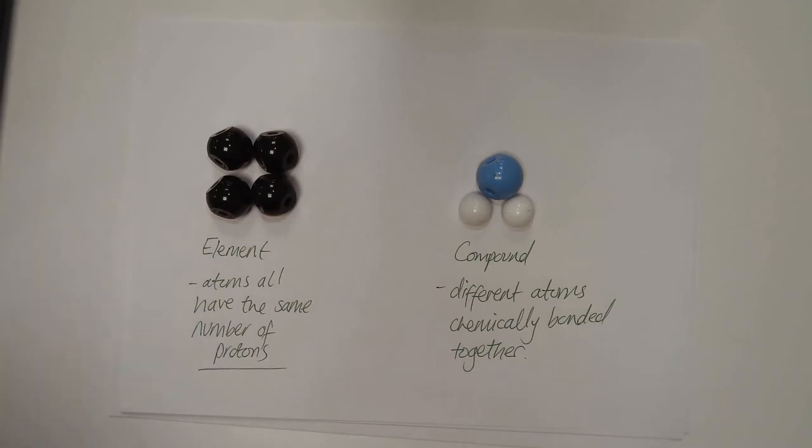Atoms are essentially the building blocks of substances, they're very tiny particles. They are made up of other subatomic particles which we'll go into in a bit more detail when we look at the structure of an atom, but essentially for today they are the building blocks of substances.